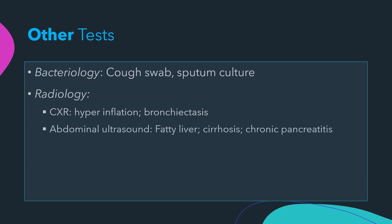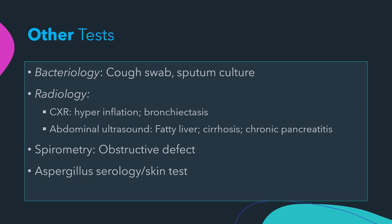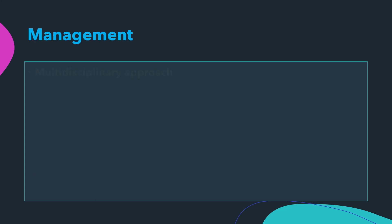Abdominal ultrasound may show fatty liver, cirrhosis, and features of chronic pancreatitis. Spirometry may reveal an obstructive defect. Aspergillus serology and skin testing should be considered, as 20% of patients develop allergic bronchopulmonary aspergillosis. Fecal fat analysis should be done in cases of steatorrhoea and chronic diarrhoea.